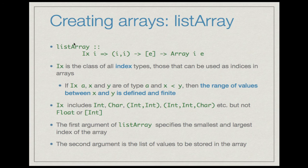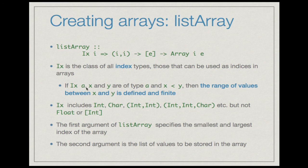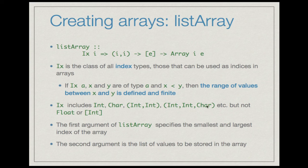Let us look at listArray in more detail. listArray has type: Ix i => (i, i) -> [e] -> Array i e. Ix is the type class of all index types — those types that can be used as indices in arrays. If Ix a holds and x and y are of type a with x < y, then the range of values between x and y is defined and finite. Ix includes the types Int, Char, (Int, Int), (Int, Int, Int), triples, etc.